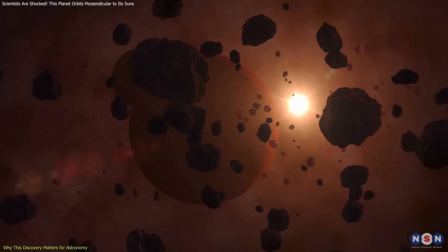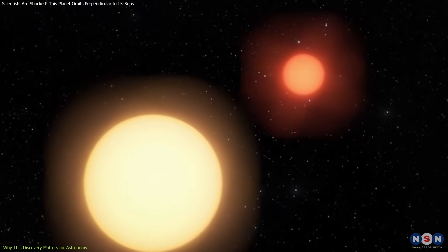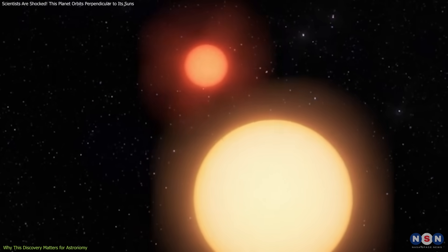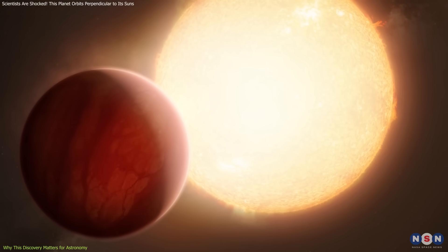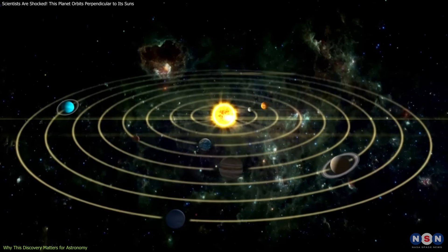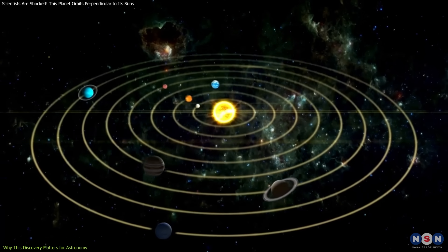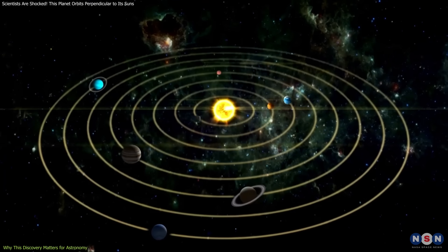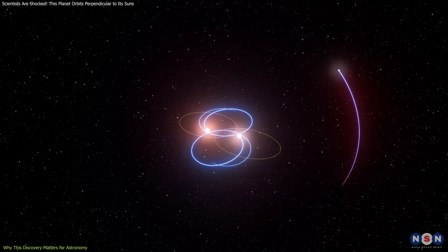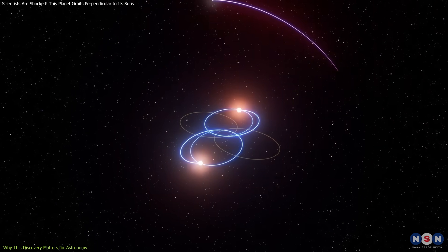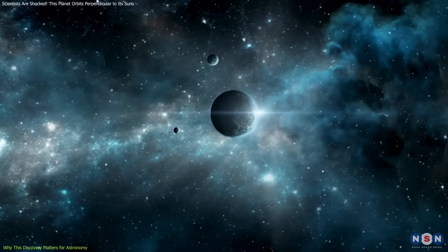Finally, this planet reminds us that cosmic systems are often more diverse, chaotic, and unpredictable than any single theory can capture. It echoes the discovery of hot Jupiters in the 1990s, which forced scientists to abandon the idea that all planets form, and stay, in neat, circular, solar system-like orbits. Now, perpendicular-orbit planets could be the next frontier that challenges, and ultimately enriches, our understanding of cosmic architecture.